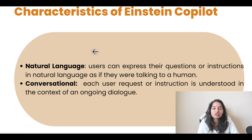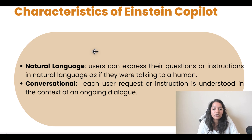The second important characteristic is conversational. Whenever Einstein Copilot is responding to your queries, it keeps the whole context and the whole dialogue in mind before giving you a response. Each user request or instruction is understood in the context of an ongoing dialogue — that is what makes it conversational. So these are the two main characteristics: natural language and conversational.